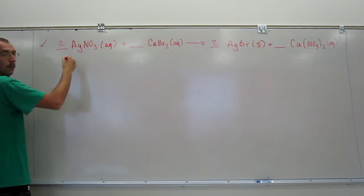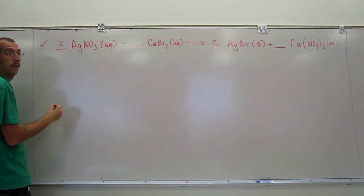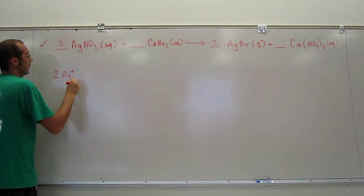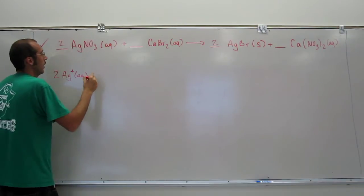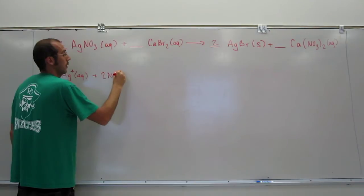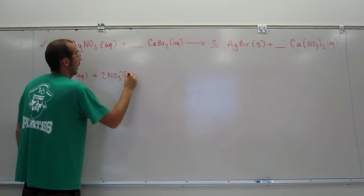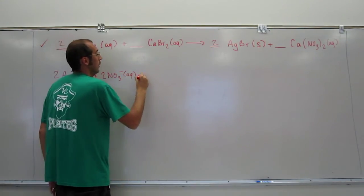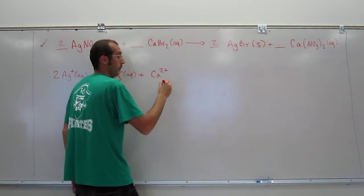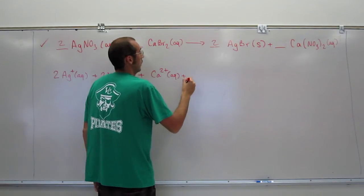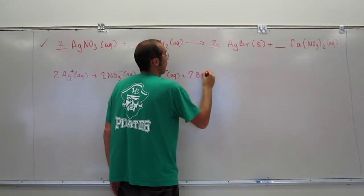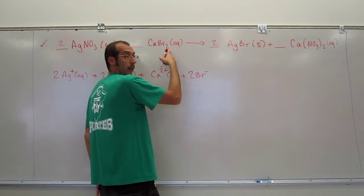The total ionic is to break it all up and you've got to remember to keep those coefficients, right? So it's going to be 2Ag plus and aqueous. 2, right, plus 2NO3 minus aqueous. You can help me out if you want. Plus Ca, 2 plus, right, aqueous, plus 2Br, right, minus, remember it's 2Brs when you break that thing up. It's not Br2, right?